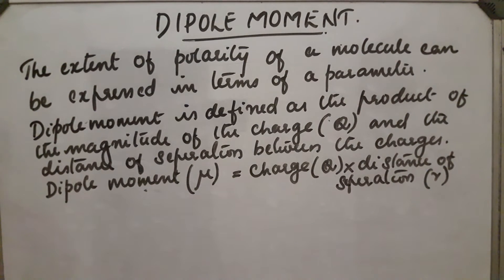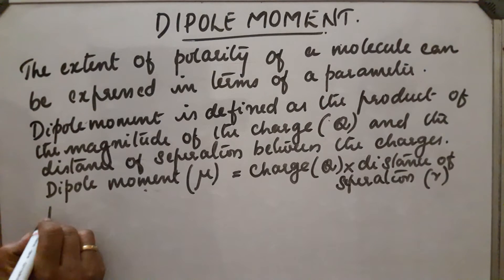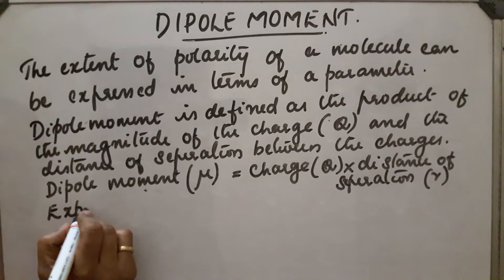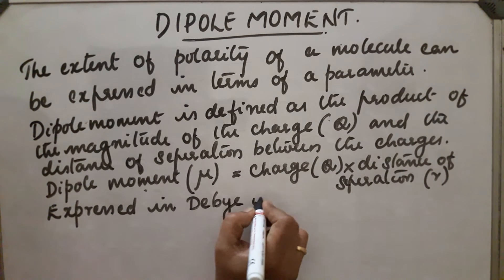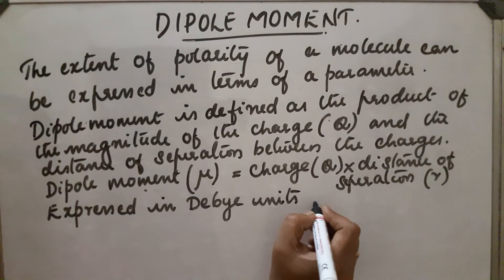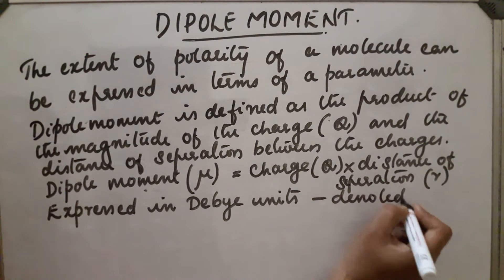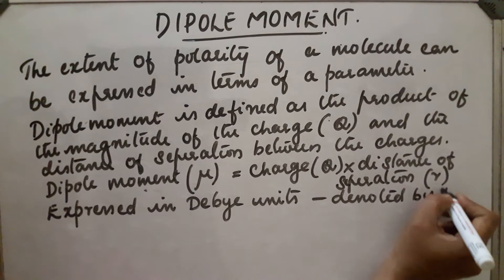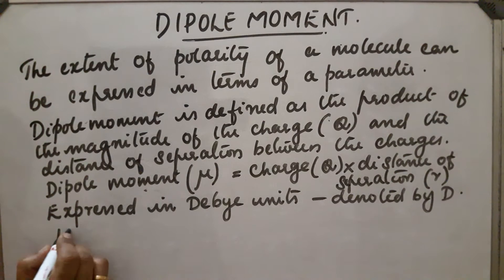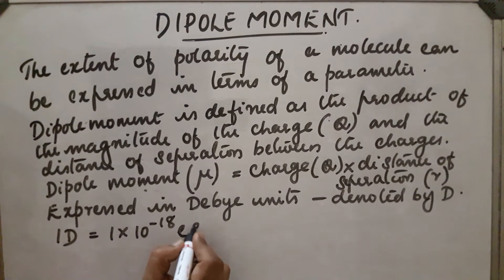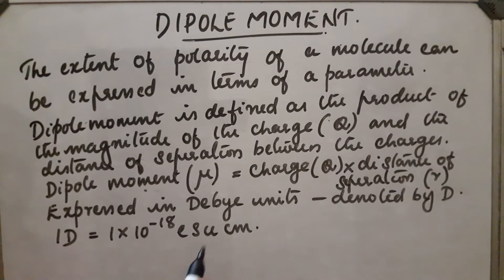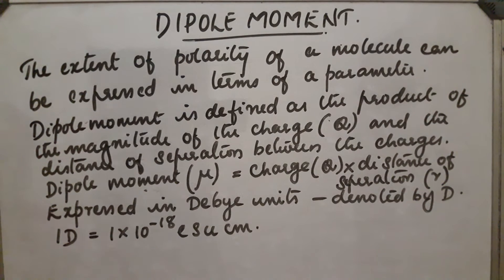The dipole moment is expressed in Debye units, denoted by D. So 1D is equal to 1 into 10 raise to minus 18 ESU centimetre. ESU stands for electrostatic unit, which is the unit of charge, and centimetre is the unit of distance of separation.